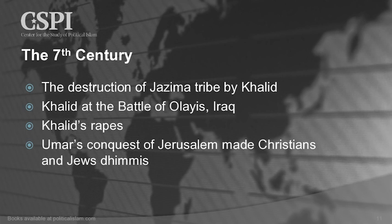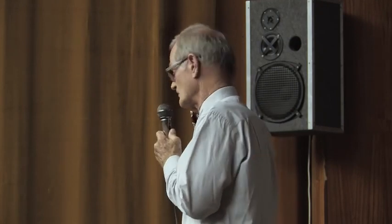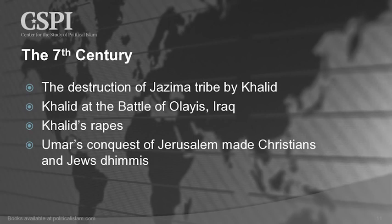At the Battle of Ullais in Iraq, after the battle was over, Khalid, the Sword of Allah, brought forth the chieftain who survived and his wife. He cut off the chieftain's head, soaked in the blood, then raped the wife on top of her husband's blood. We will study the doctrine of jihad, which includes the doctrine of rape. Jerusalem fell, and Christians and Jews were made dhimmis — semi-slaves, not full citizens.